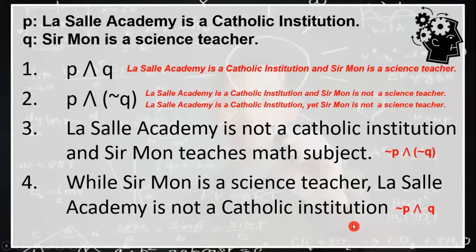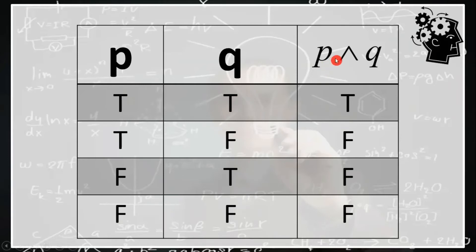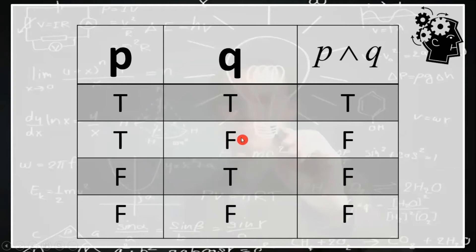When can we say that these statements are true or false? The truth table for conjunction shows that the first two columns contain all possible combinations of truth values of P and Q. The conjunction P ∧ Q is true only when both P and Q are true. Otherwise, it is false. If at least one of the conjuncts is false, then the conjunction is false.